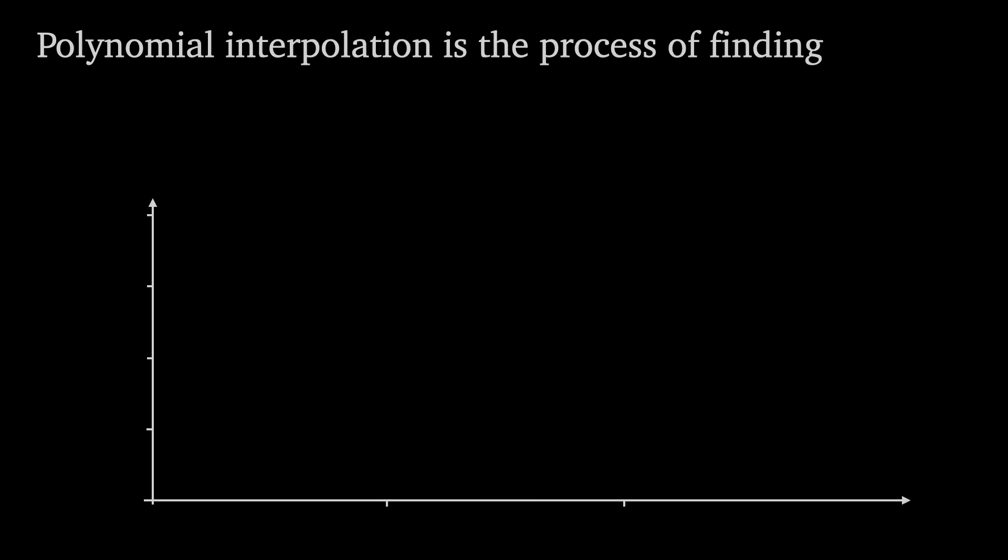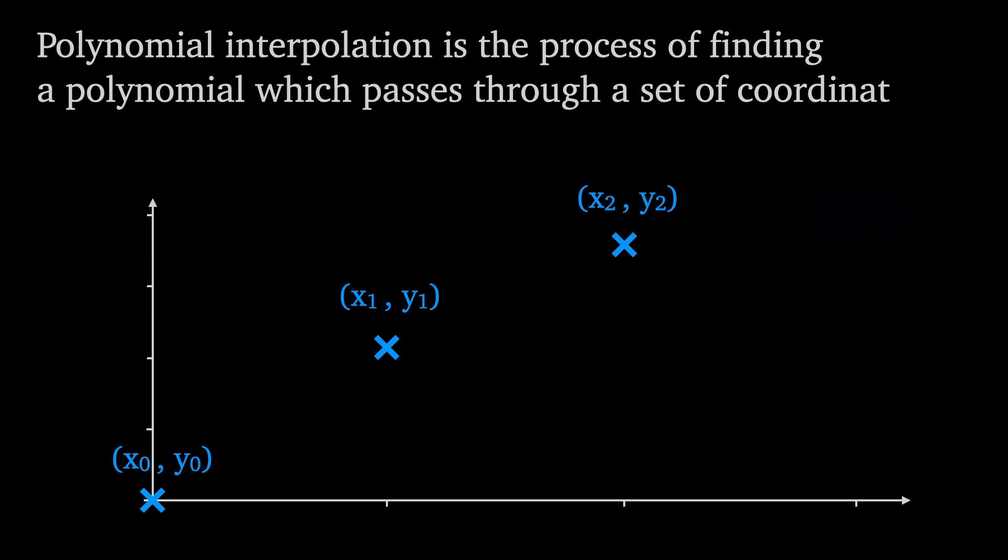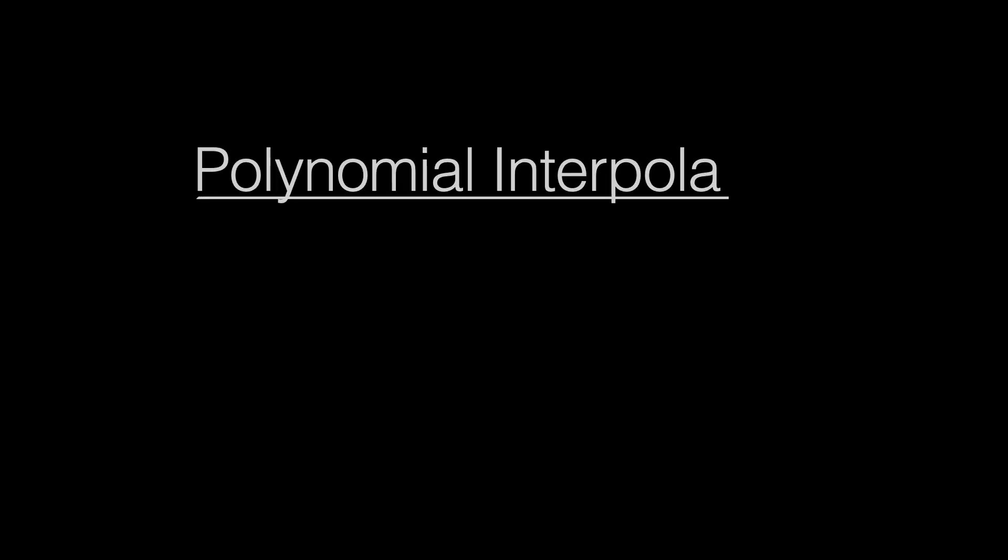Polynomial interpolation is the process of finding a polynomial which passes through a set of coordinates. The Vandermonde matrix is a method of finding such a polynomial, but it's also a useful theoretical tool, as we'll see in this video.